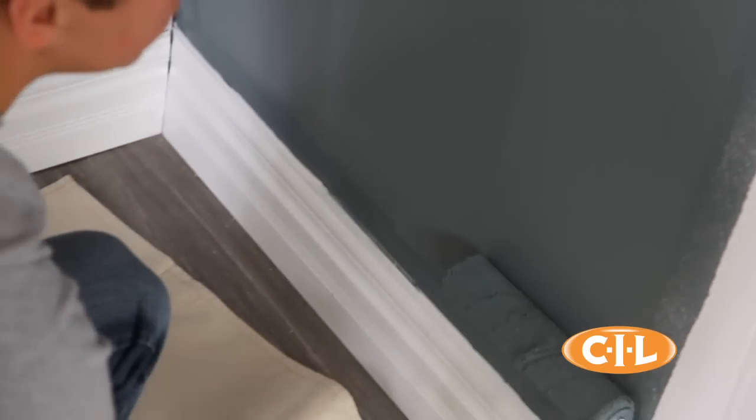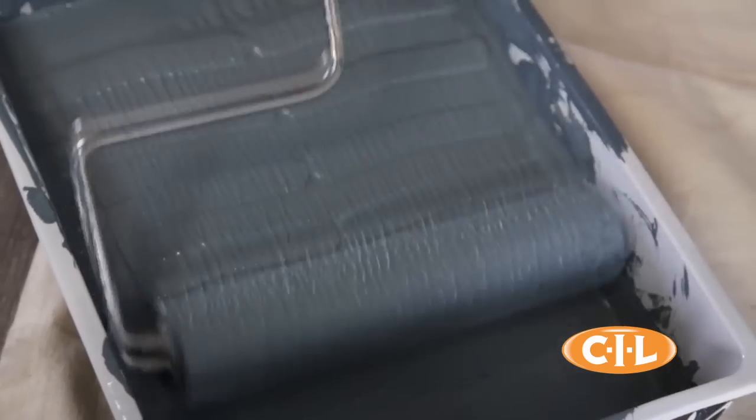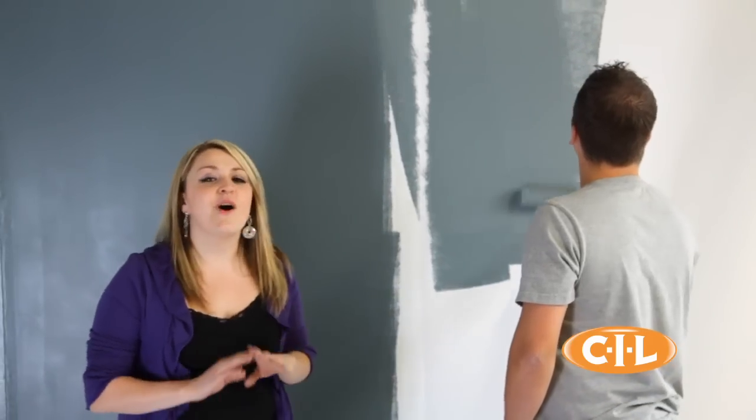Always make sure you have enough paint on your roller. If you can see the lines, you need to reload. Repeat the whole process starting with the area next to the first section until the wall is perfectly painted.